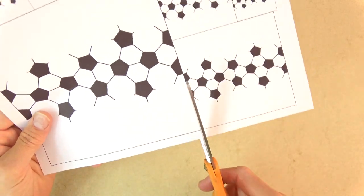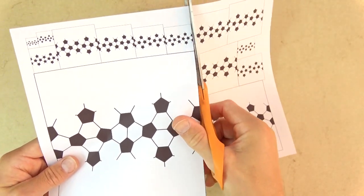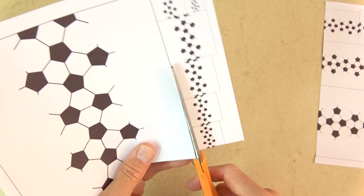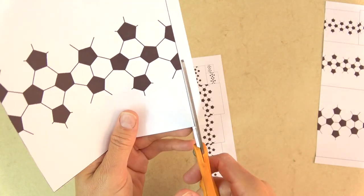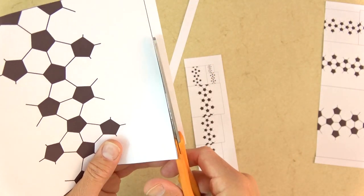So the first step after you print out the pattern is to cut it out. Depending on how big you want the soccer ball, then just cut out whichever square. If you want a bigger soccer ball, then cut out a bigger pattern. If you want a smaller ball, cut out a smaller pattern.